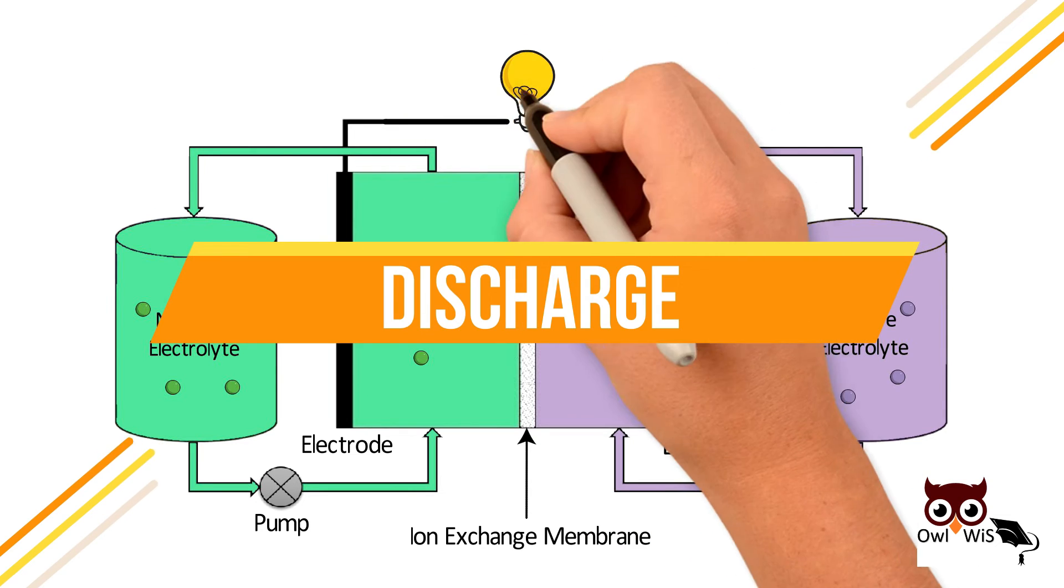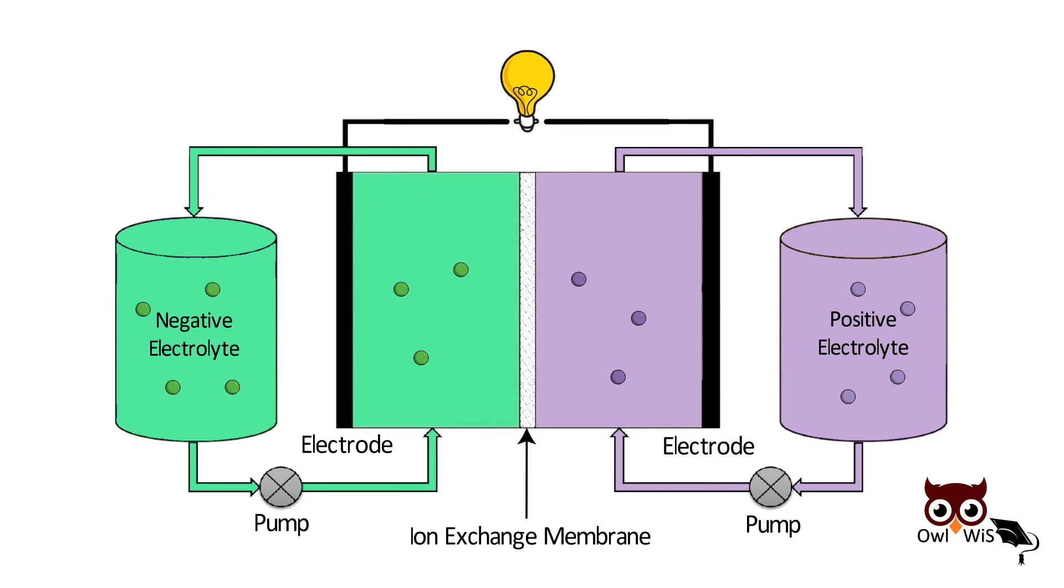During discharge, electroactive elements on the negative side oxidize, releasing electrons that flow through an external circuit to the positive side. The flow of electrons through external circuit produces electricity.